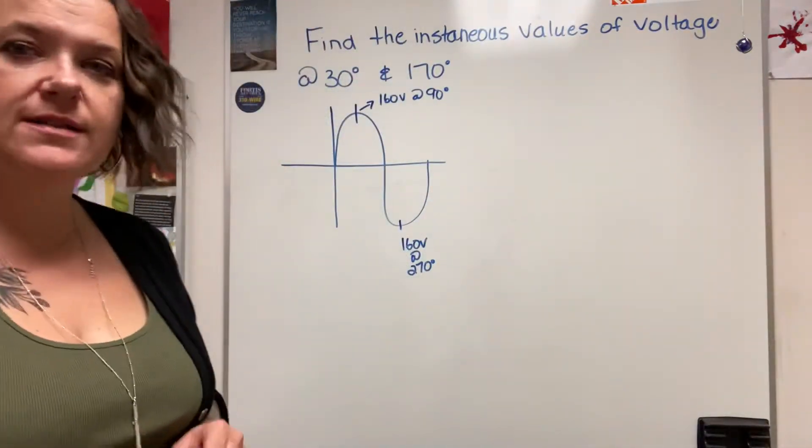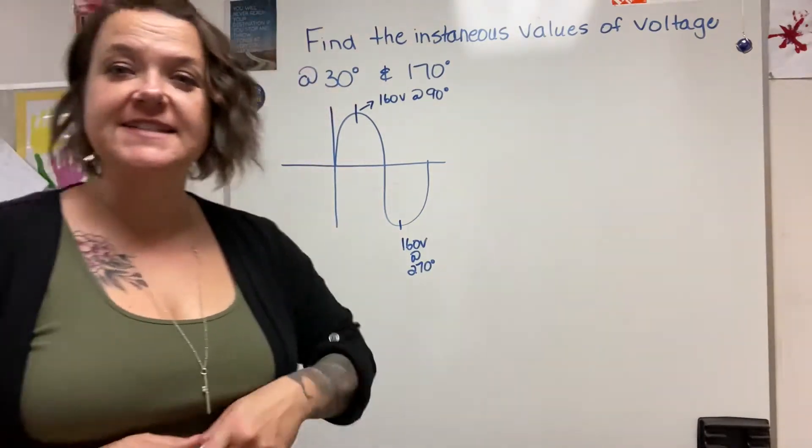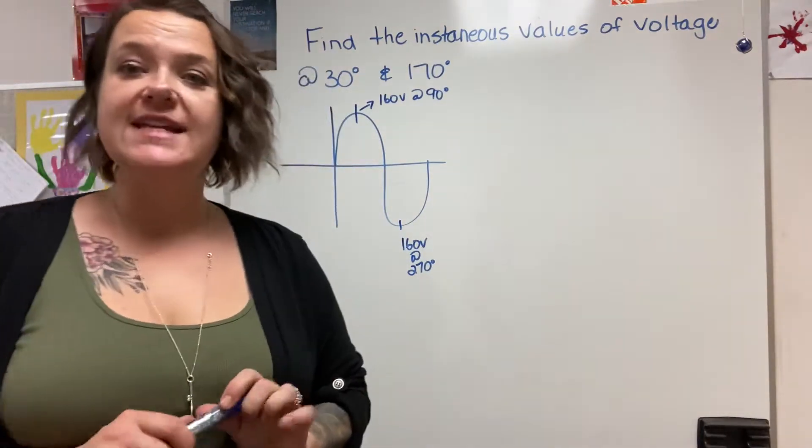Hey guys, I just wanted to go over a couple examples of finding the instantaneous value of an AC sine wave.